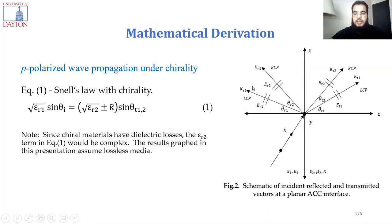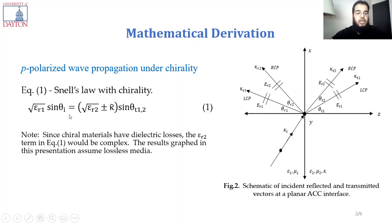In the second slide we are showing the first boundary of the slab. We have one incident and two reflected and two transmitted waves — RCP and LCP for both, which is right circular polarization and left circular polarization for the reflection and the transmission. Here in equation number one we are showing Snell's law, the standard Snell's law, but here we have chirality included in the second medium because the second medium is chiral, which is the slab.